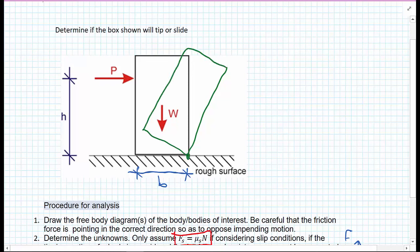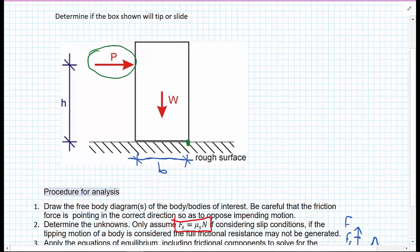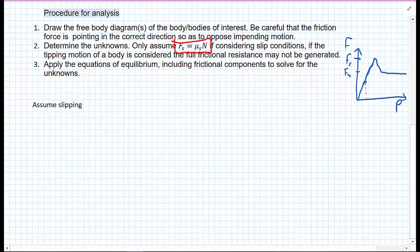So what we need to do is evaluate both situations and see which situation would lead to the lowest force P for that to occur. We have to solve the problem twice. First, we're going to assume that the box is slipping.